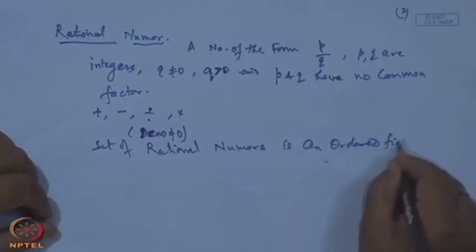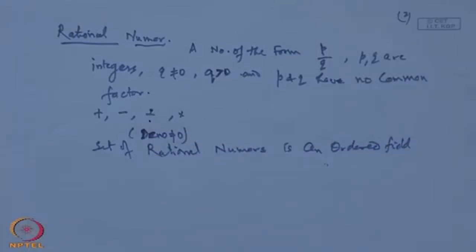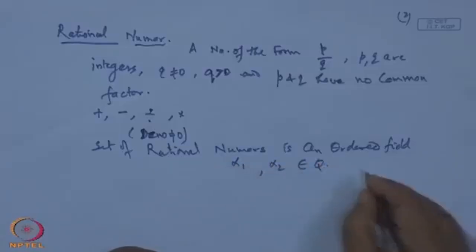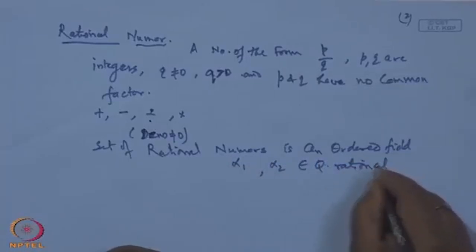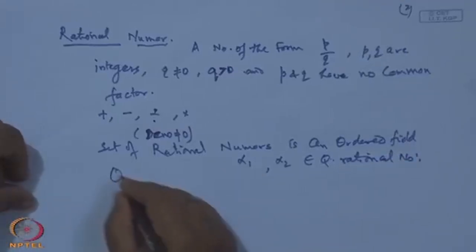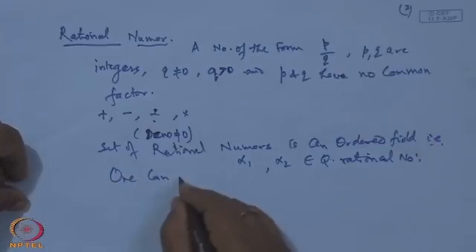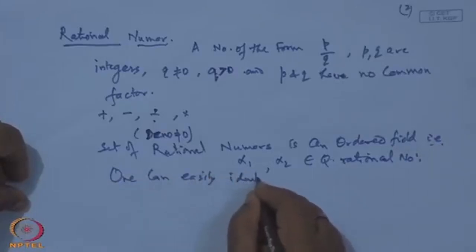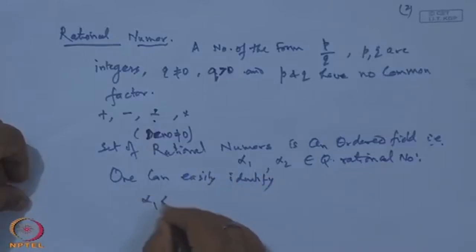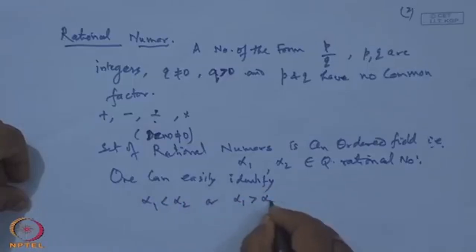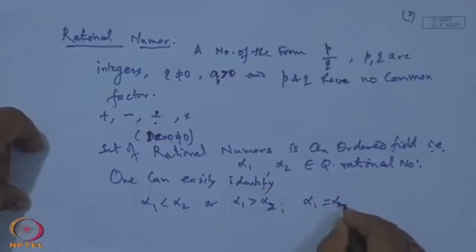By 'ordered field' we mean that if we pick any two rational numbers from the collection, we can easily identify which number is greater, which is less, or whether they are equal. For any two rational numbers α₁ and α₂ in ℚ, one can easily identify whether α₁ < α₂, or α₁ > α₂, or α₁ = α₂.